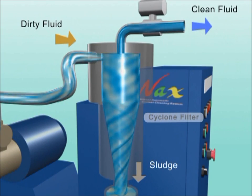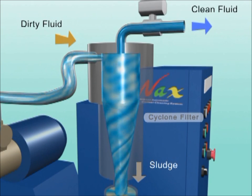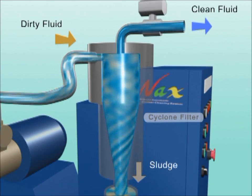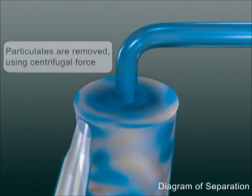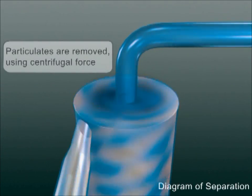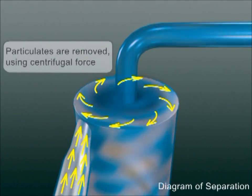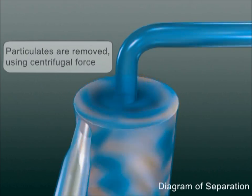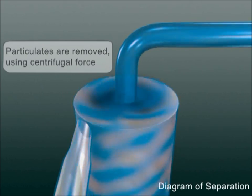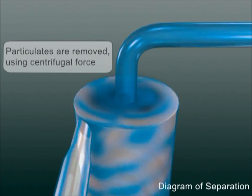Sludge within the dirty fluid is fed by a pump and driven to the outer side of the cyclone filter by centrifugal force, and the clean fluid without sludge is then extracted from the central section of the filter.